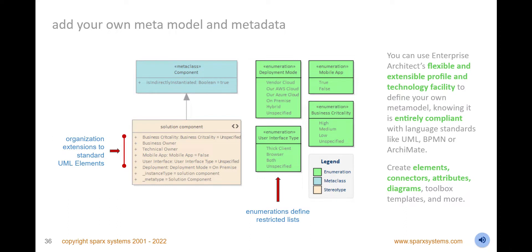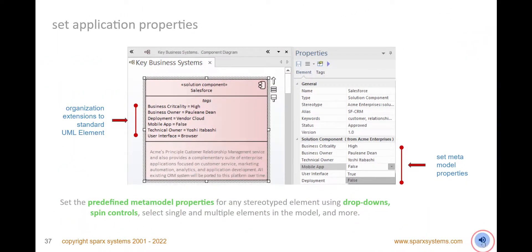Create or import an organization metamodel to capture and record enterprise or project-specific metadata. Add these properties to a range of elements, including capabilities, application components, interfaces and other elements. Create user-defined properties such as business criticality, vendor, technical and business owner, and properties that describe whether it is deployed on-premise, in your cloud, or a vendor's cloud. Use enumerations, color, date, element and package selectors, and a range of other definitions to restrict what a user can enter for the property. Visualize this metadata on powerful and interactive dashboards in Prolaborate.